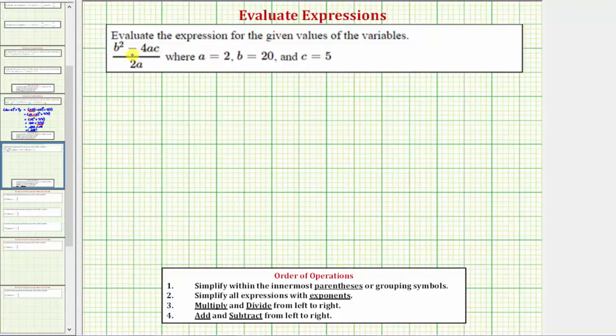We want to evaluate the expression the quantity b squared minus 4ac divided by 2a when a equals 2, b equals 20, and c equals 5.